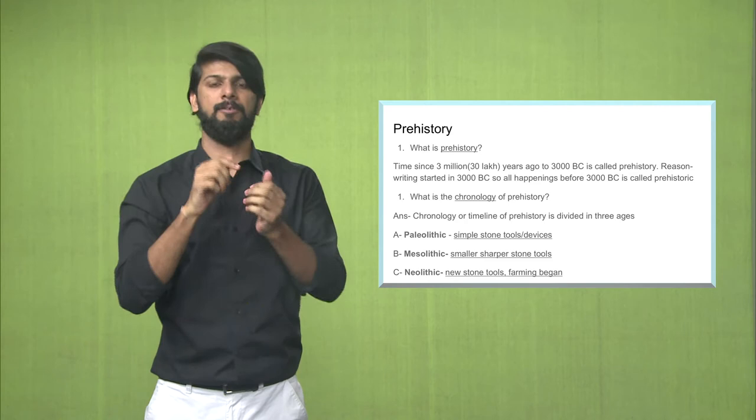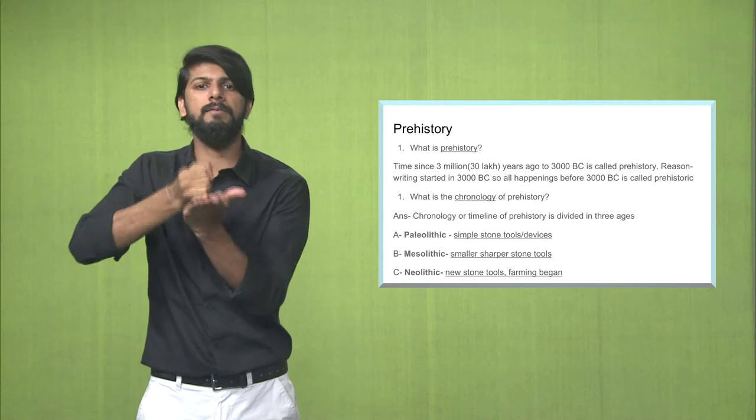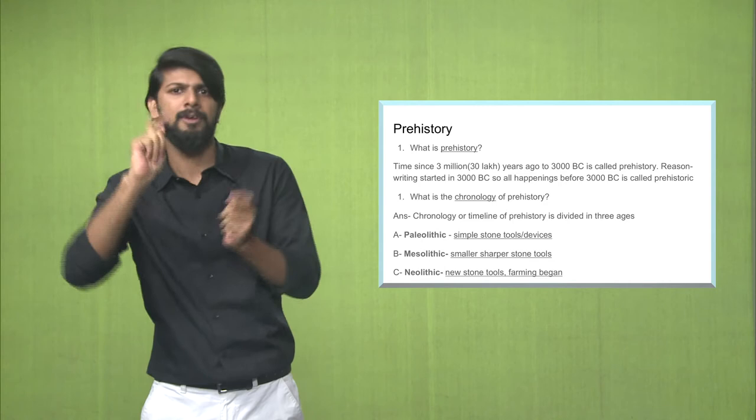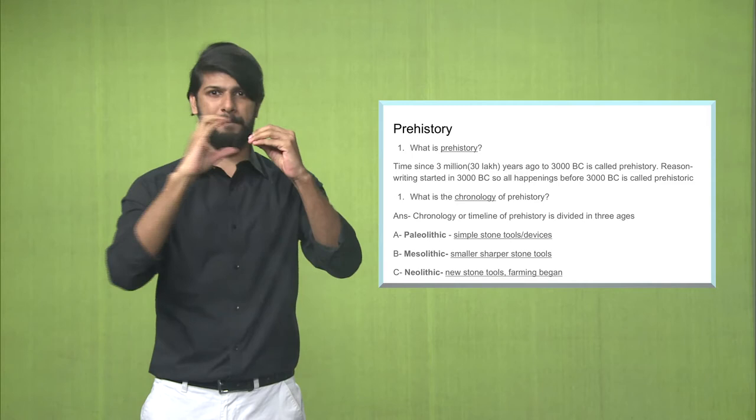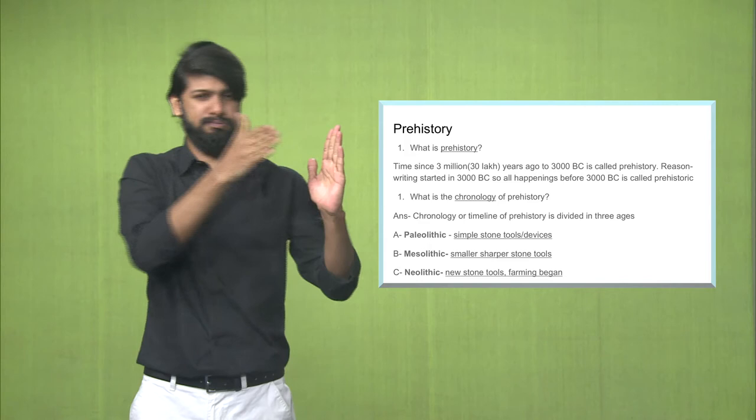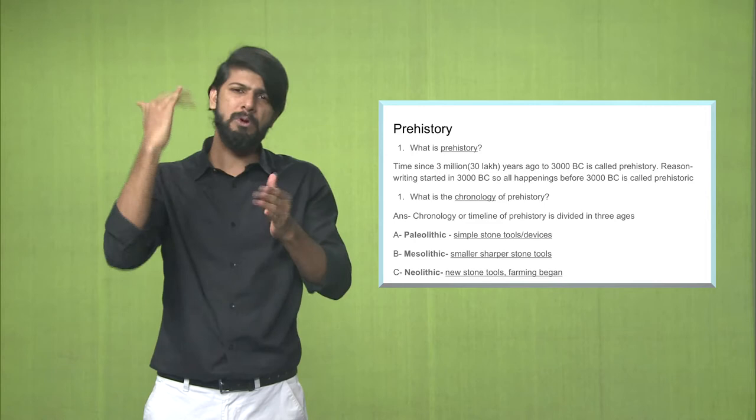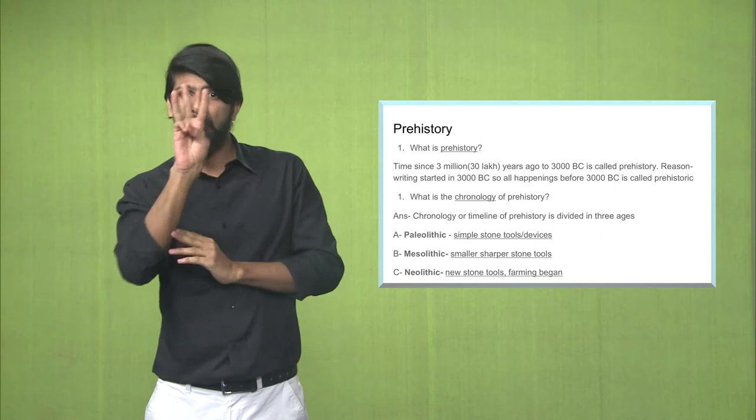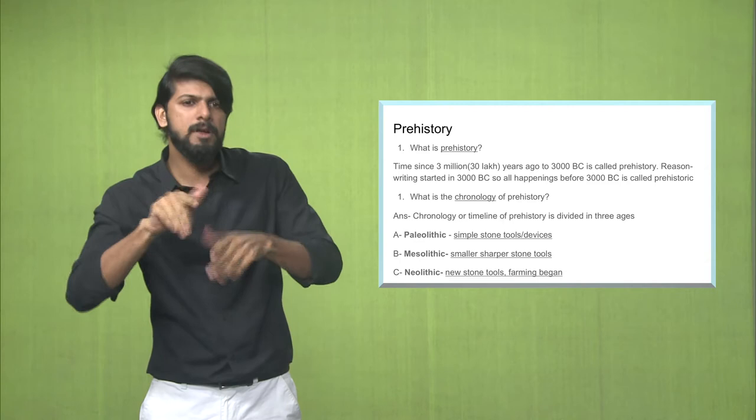Times changed, when the prehistoric men started using sharper stone tools for weapons. Until they understood how to use stone tools better, began farming. This entire time, this entire period, has no proof, no written proof, because writing was discovered during 3000 BC and beyond that.